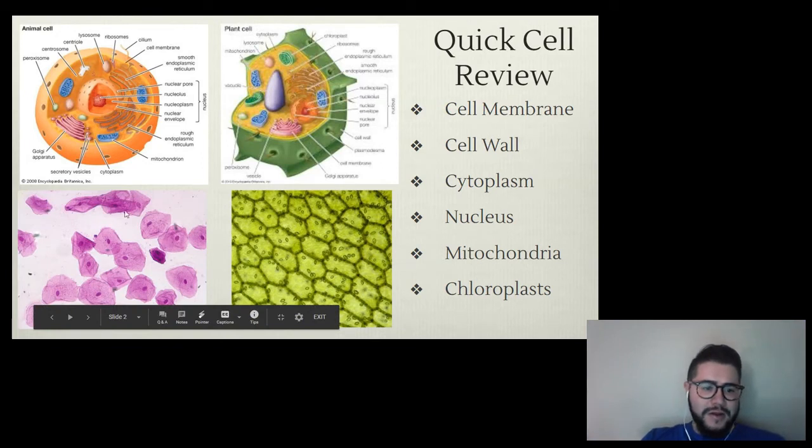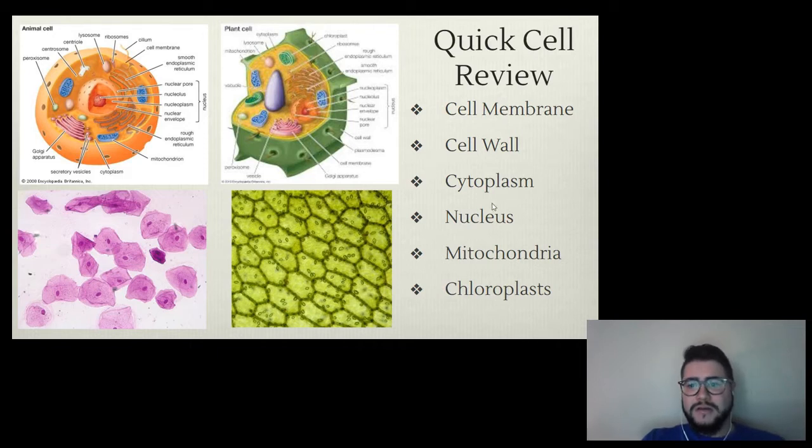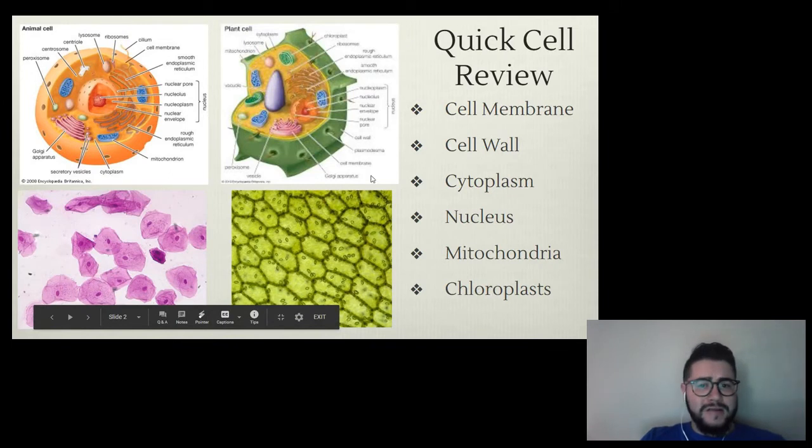You can compare the actual animal cell versus the actual plant cell. Some cell parts to remember: cell membrane controls what comes in and out of the cell. Cell walls give plant cells a rigid structure. Cytoplasm is the liquid inside the cell. Nucleus is where the DNA is stored. Mitochondria is where cellular respiration takes place and is found in both plant and animal cells. The chloroplast is found specifically in plant cells and that's where photosynthesis takes place.